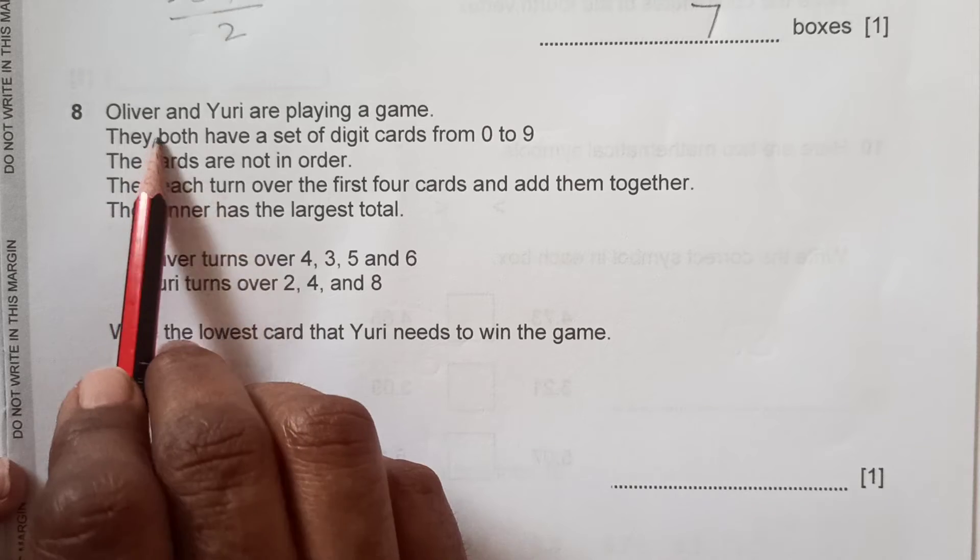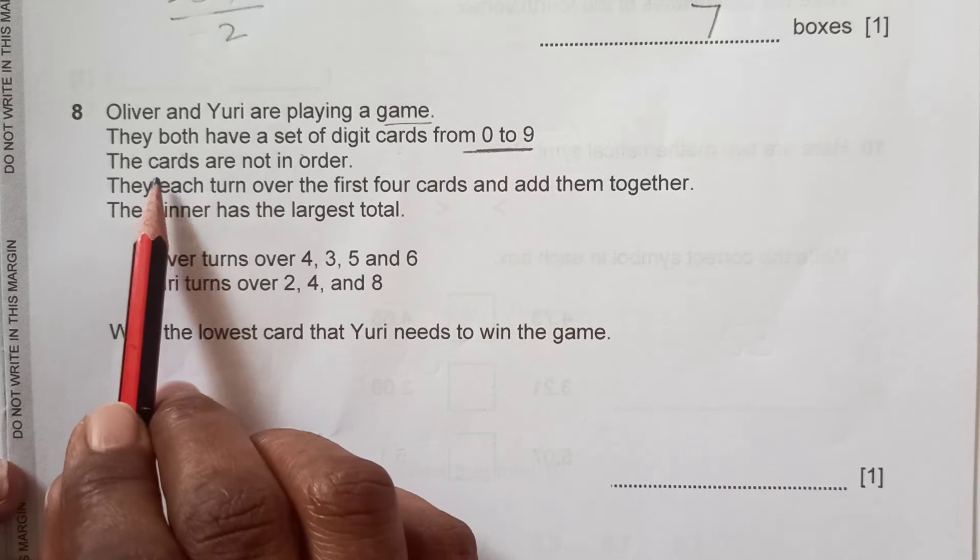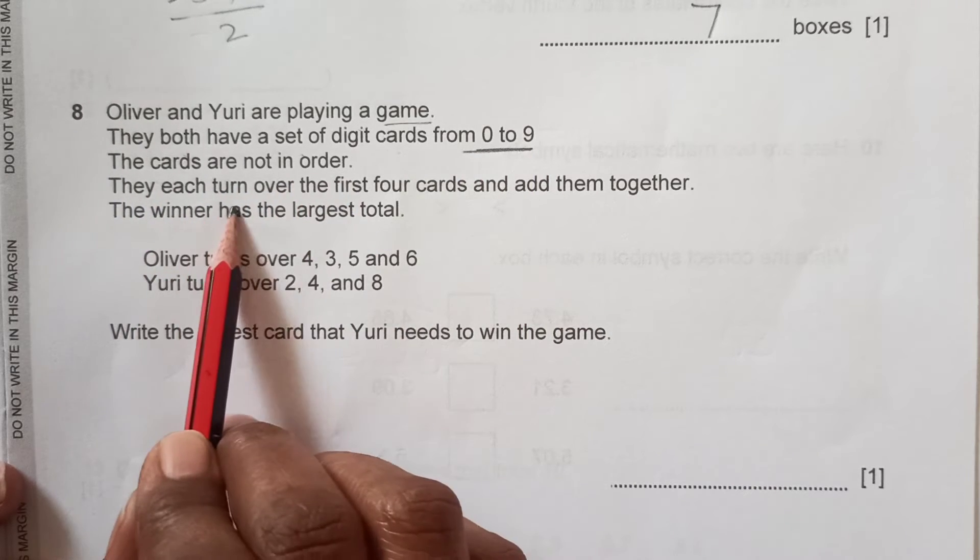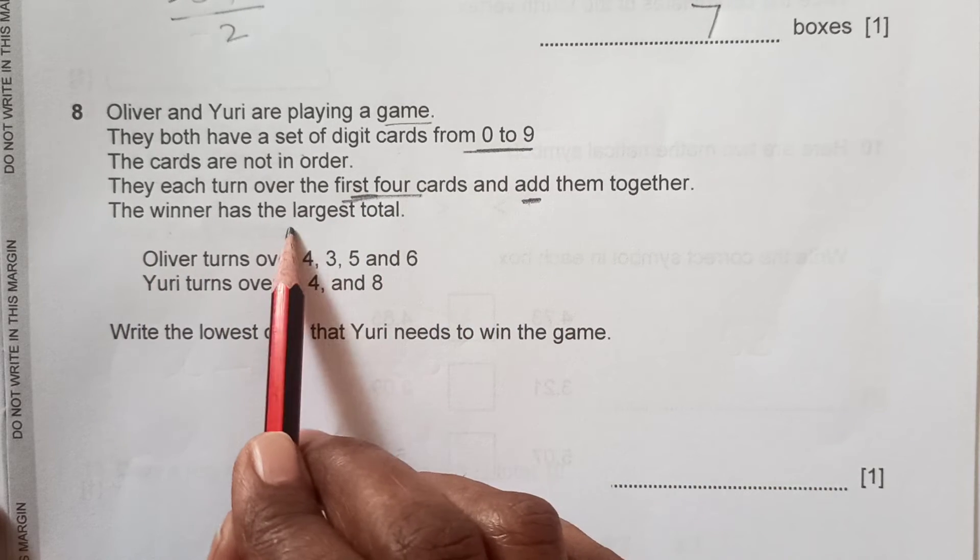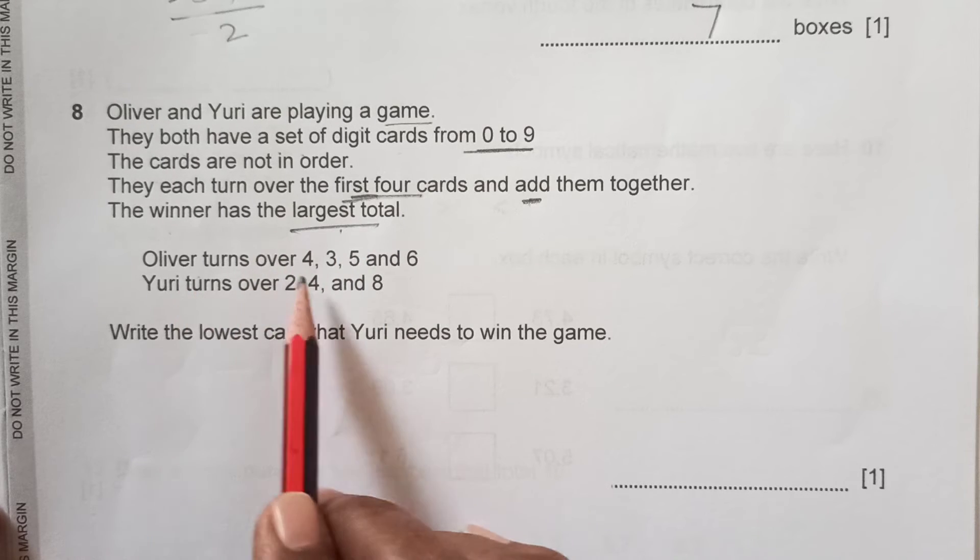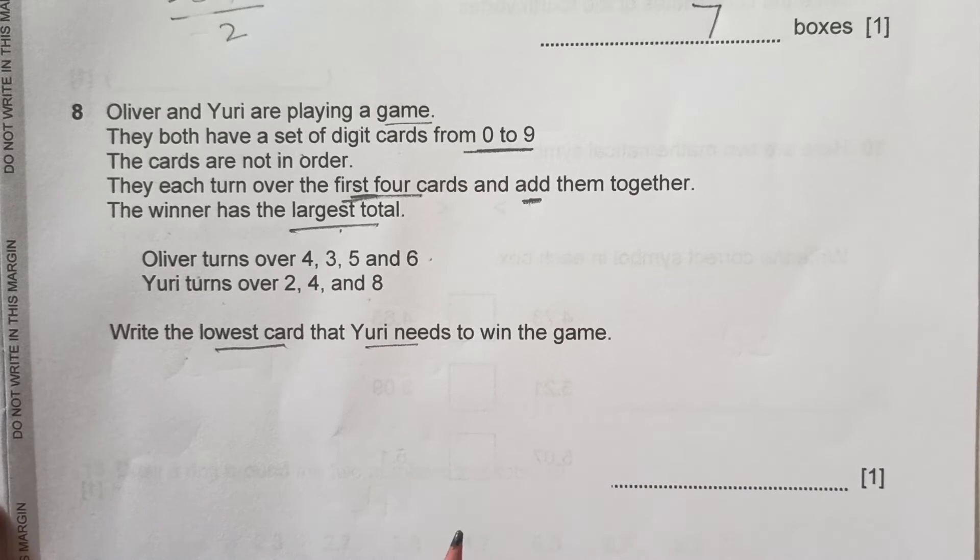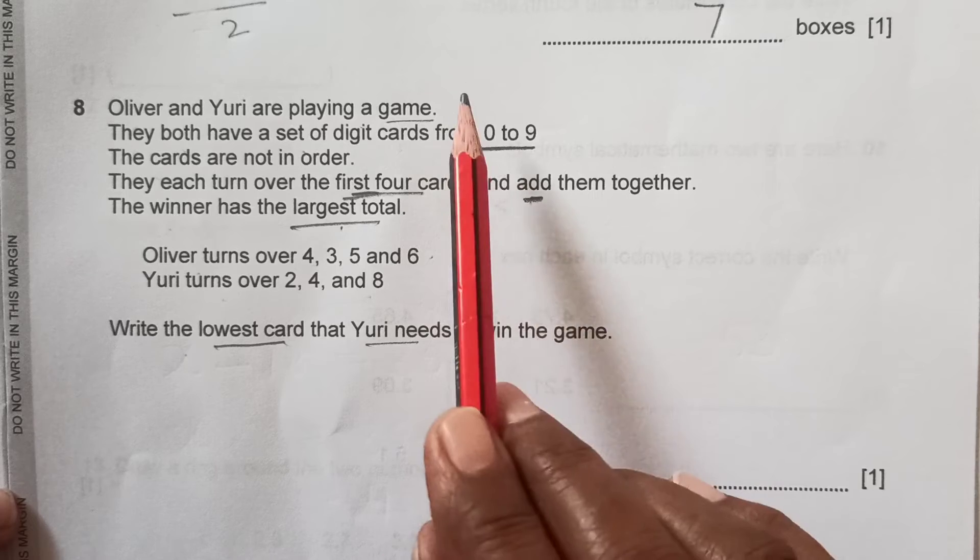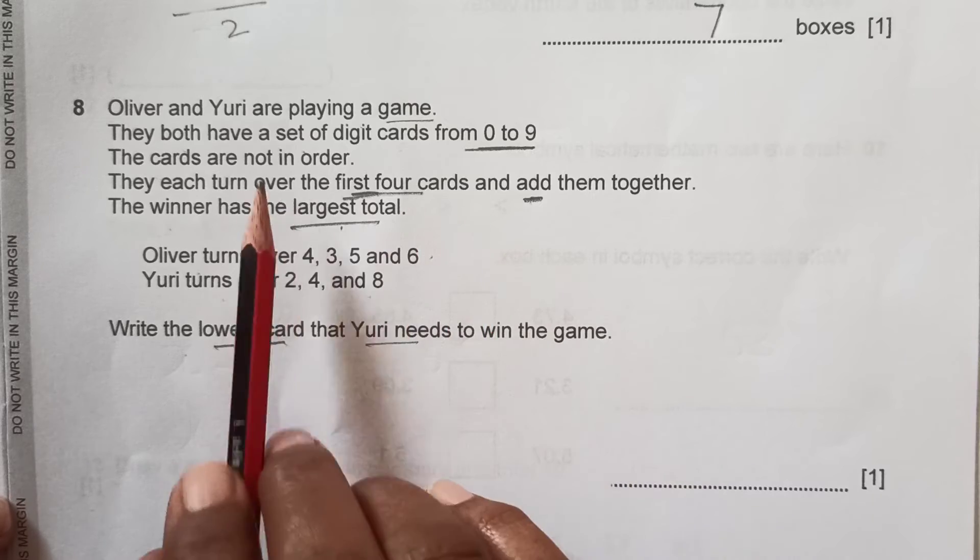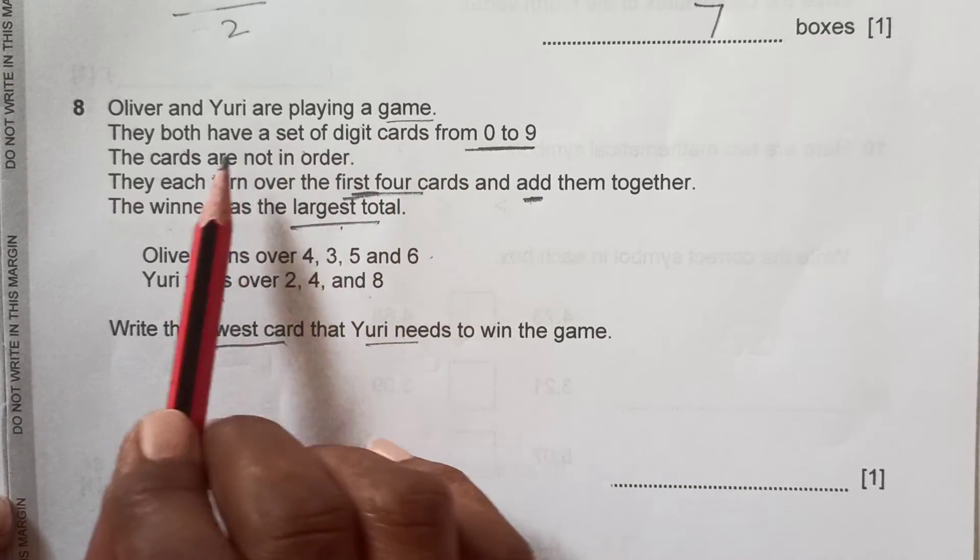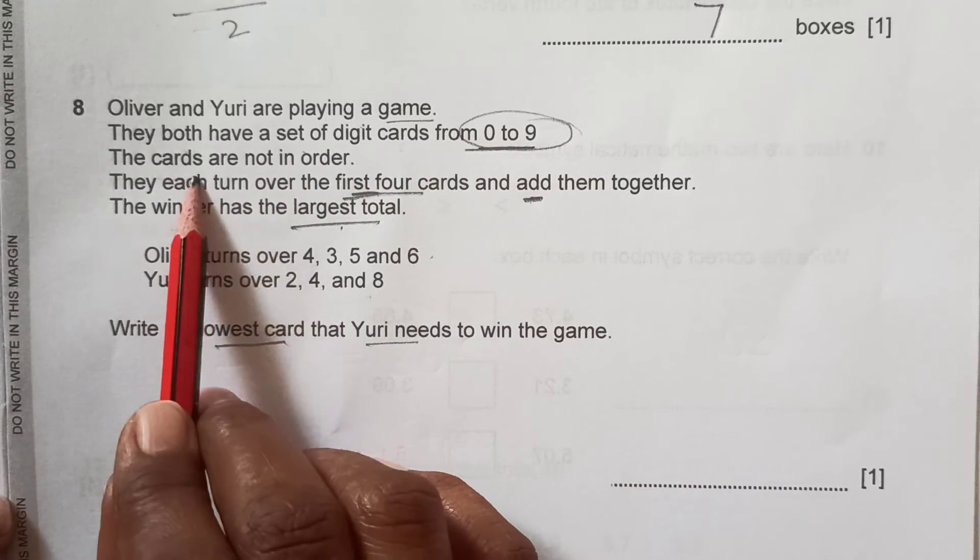Number 8: Oliver and Yuri are playing a game. They both have a set of digit cards from 0 to 9, and the cards are not in order. They each turn over the first four cards and add them together. The winner has the largest total. Oliver turns these cards and Yuri turns these cards. Write the lowest card that Yuri needs to win the game. You see there are so many effects given here, I mean information in different sentences, so you should always underline the keywords that can help you for the answer.